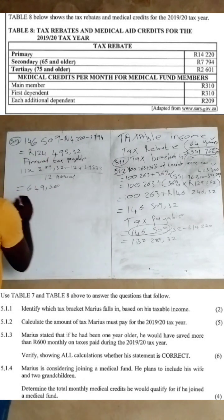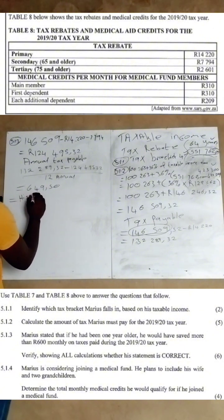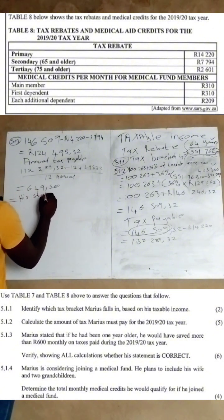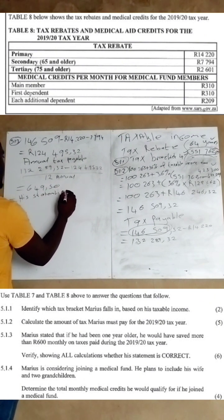Since R649.50 is more than R600, Marius's statement is correct.